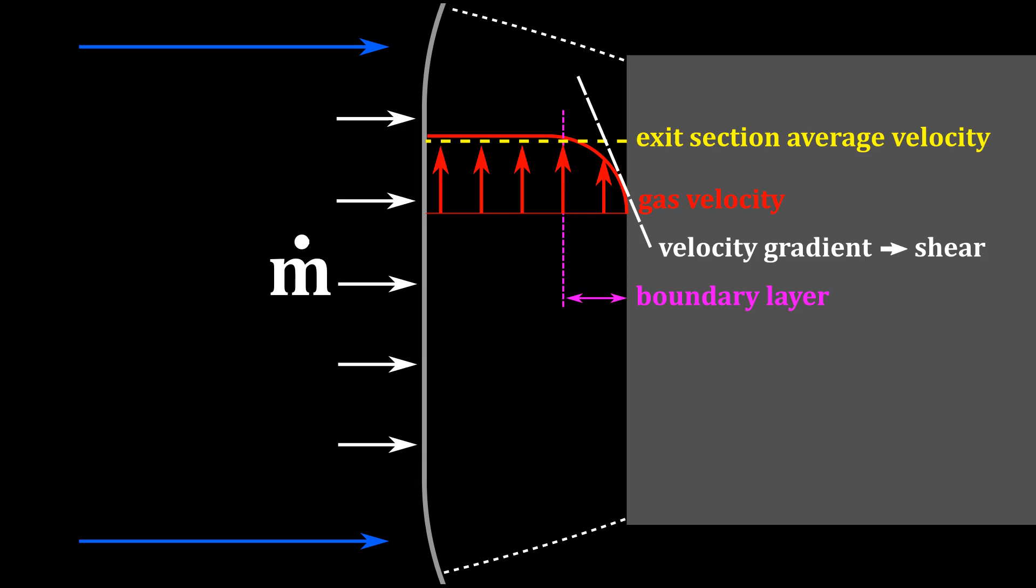Now we can see why blunt bodies reduce the stagnation point heating. It is clear that we should design our re-entry capsules to be as blunt as possible.